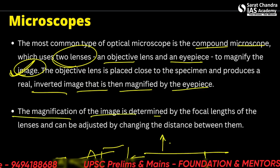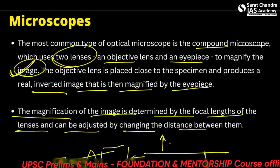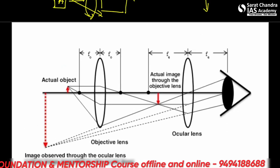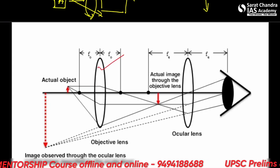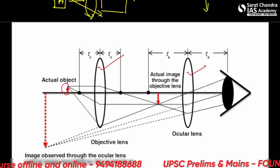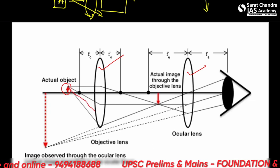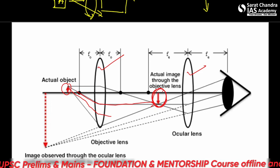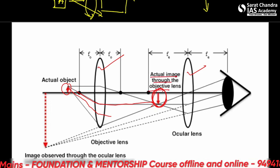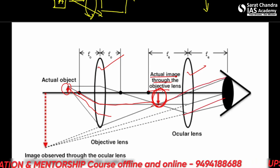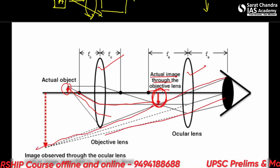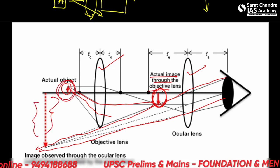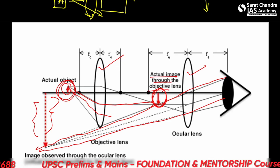The magnification of the image is determined by the focal length of the lenses and can be adjusted by changing the distance between them. The objective lens forms an actual inverted image, and the ocular lens then produces a virtual, magnified image for the eye to see — making small objects appear much bigger than they actually are.